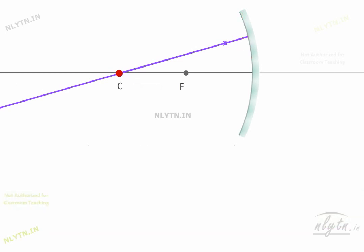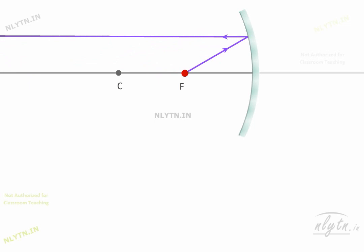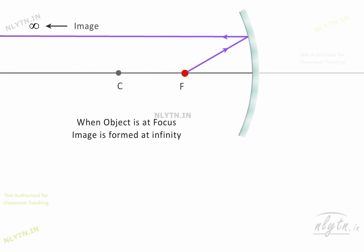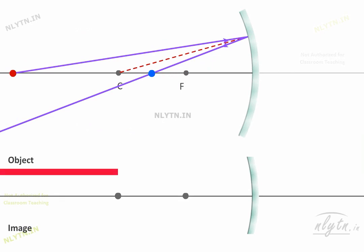Now, if the object moves towards the focus, the incident ray goes on the other side of the normal and thus the reflected ray comes on this side. And when the object reaches focus, the reflected ray becomes parallel to the principal axis and thus the image is formed at infinity. Note that when the object is in this region, the incident ray is on this side of normal and thus the reflected ray has to be on this side of the normal, and the image is in this region.